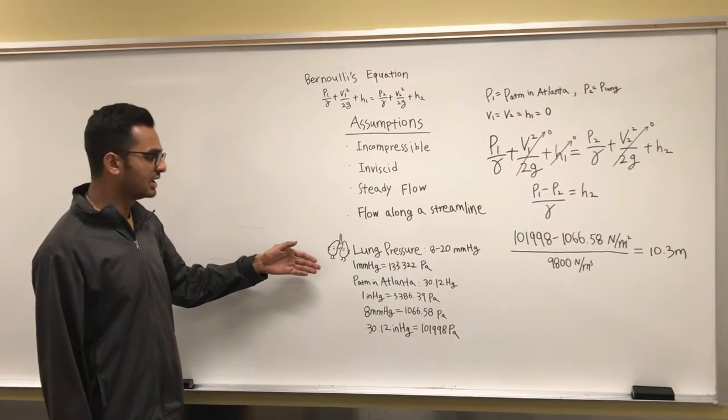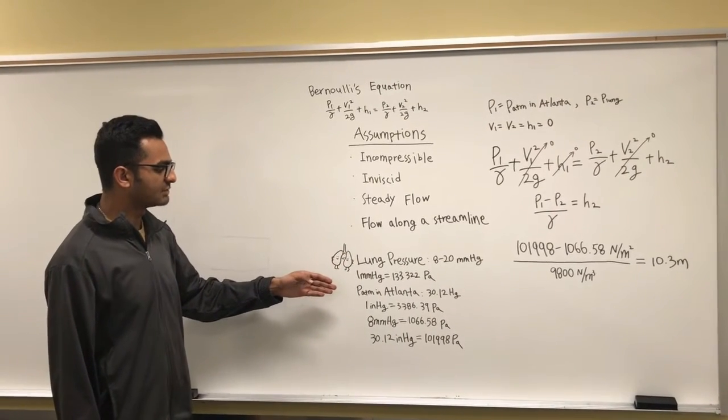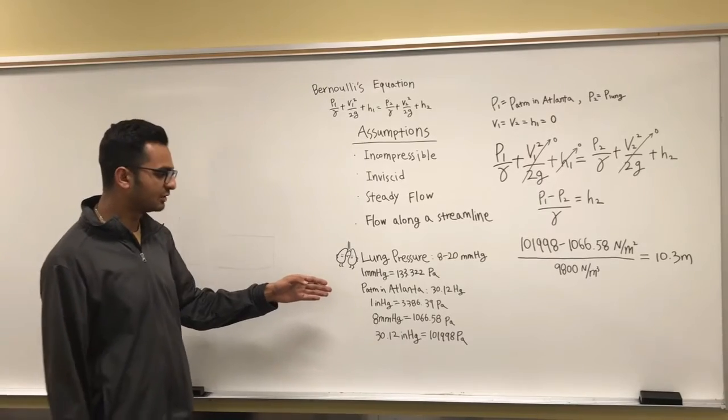We also have a couple of parameters. The lung pressure is assumed to be between 80 to 120 millimeter mercury and we have a specified value for the atmospheric pressure in Atlanta.